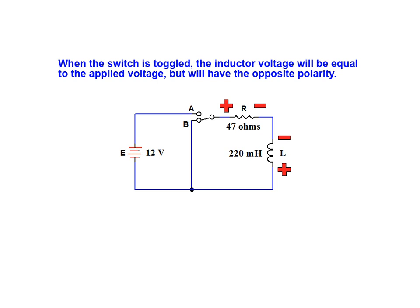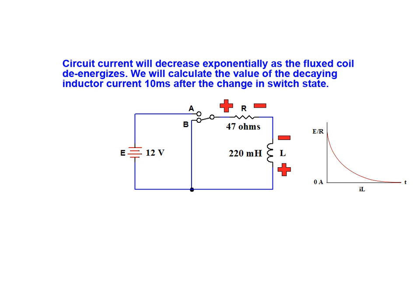When the switch is toggled, the inductor voltage will be equal to the applied voltage but will have the opposite polarity. Circuit current will decrease exponentially as the fluxed coil de-energizes. We will calculate the value of the decaying inductor current 10 milliseconds after the change in switch state.